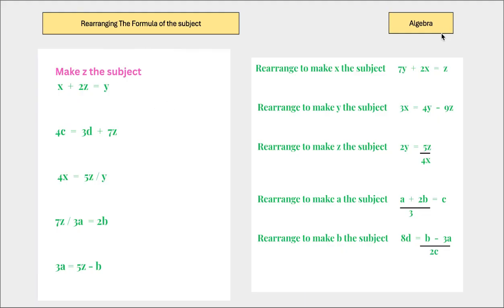So it's algebra — there are letters and numbers. Let's make an algebraic question: x plus 2 equals 5. We need to take this 2 over the equal sign and change the sign. So it's a plus, it becomes a negative. So x equals 5 minus 2, which means x equals 3. That's basic algebra.